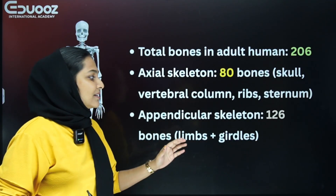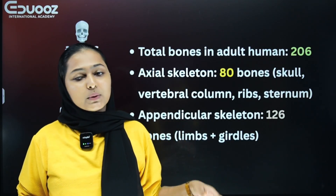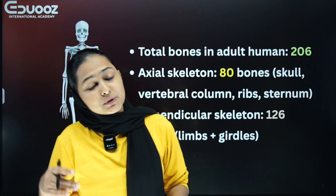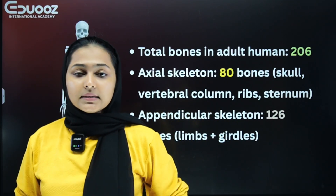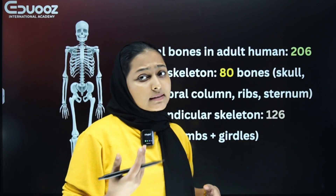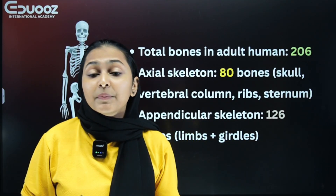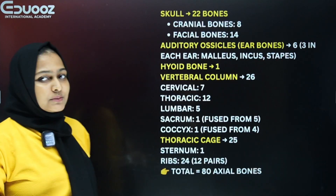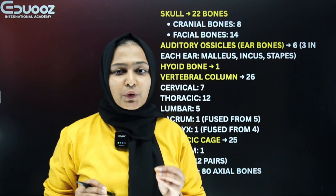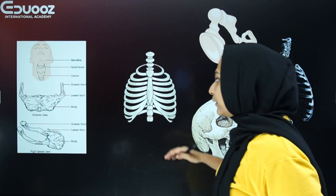The appendicular skeleton has 126 bones. It includes our limbs — upper limbs and lower limbs — and then we have girdles: the pectoral and pelvic girdles. The pectoral girdle includes clavicles and scapula. We also have hip bones. Let's look at the images in this slide.